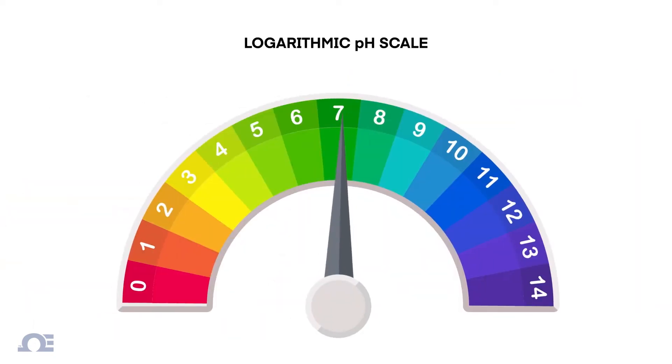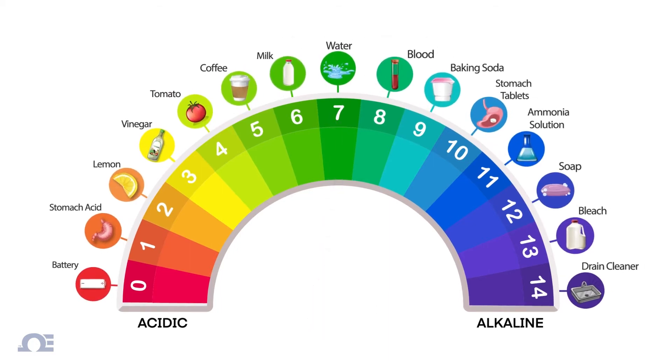The logarithmic pH scale ranges from 0, acidic, to 14, alkaline or base, with 7 being neutral. Here are some examples of different substances and where they fall on the pH scale.